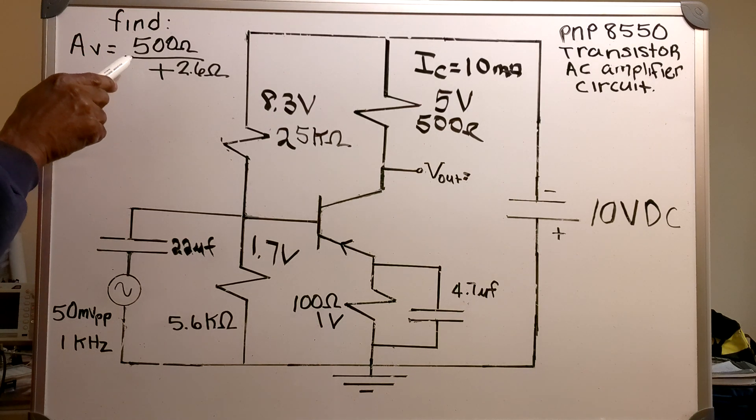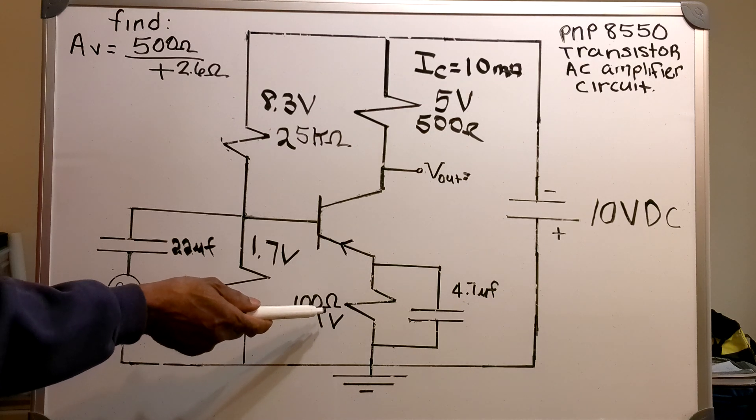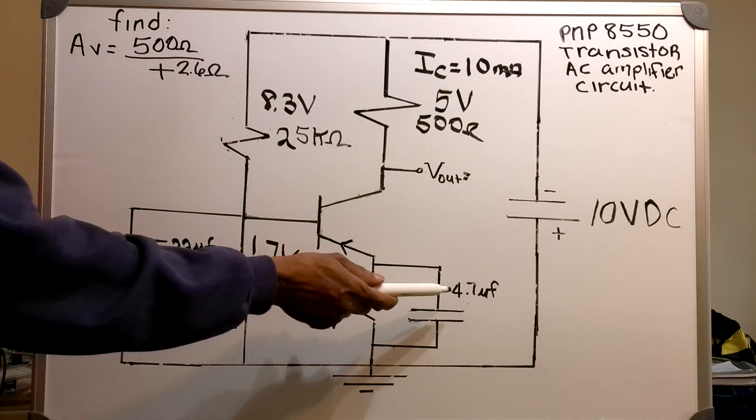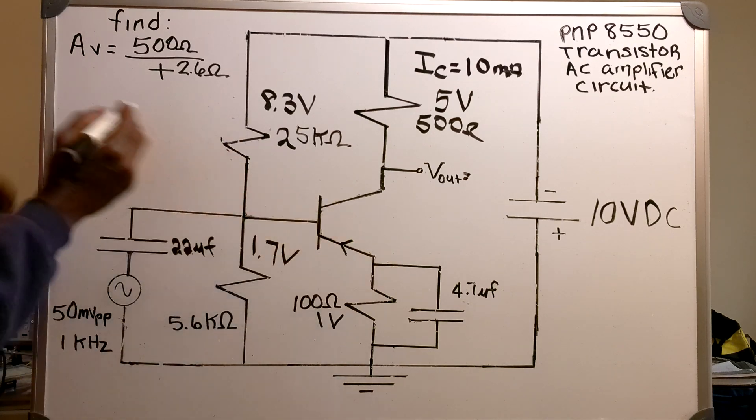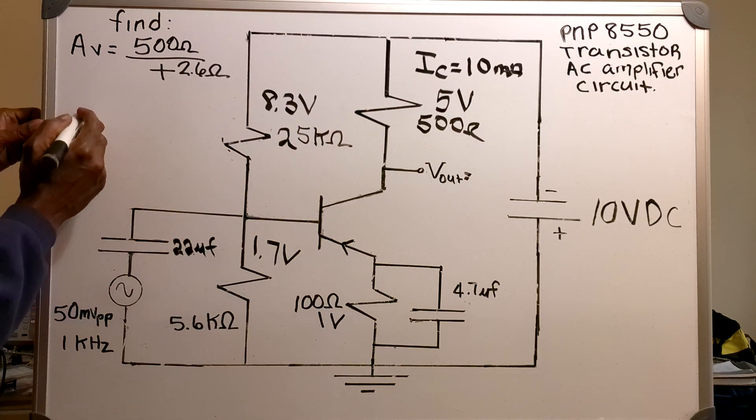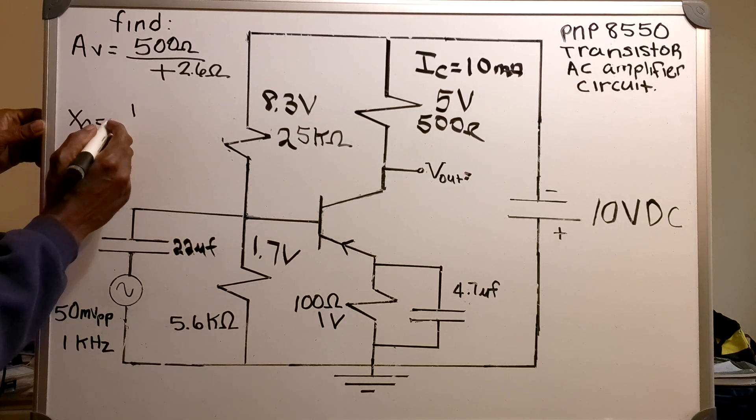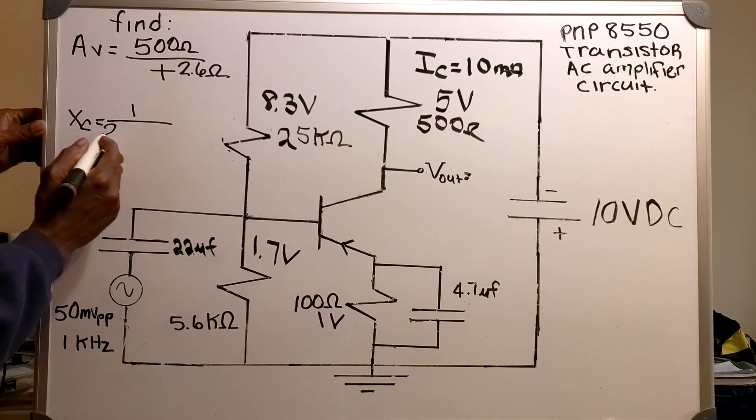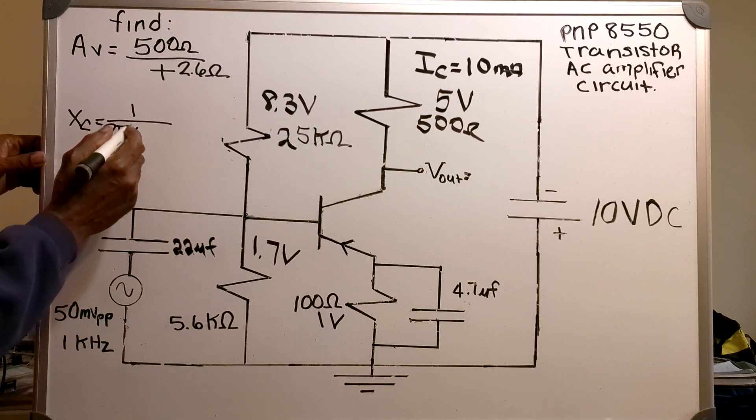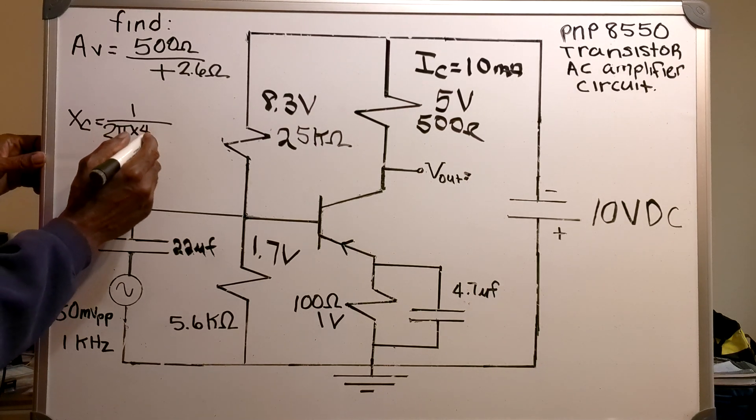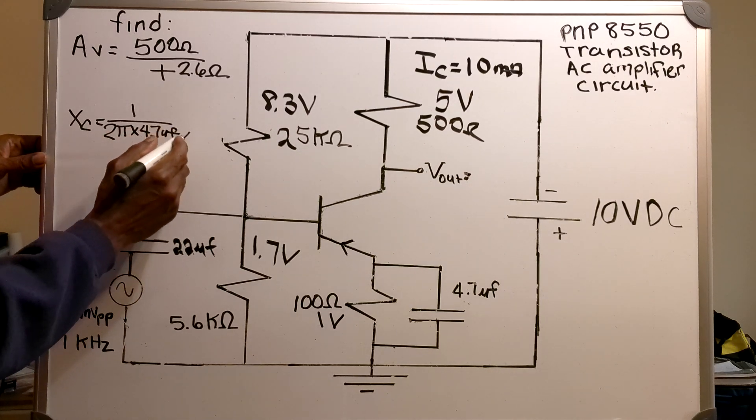Now, I will be finding this number, which involves my 100 ohm resistor in parallel with my 4.7 microfarad capacitor. The first thing I will find is my XC. And my XC equals 1 over 2 pi times 4.7 microfarads times 1 kHz.